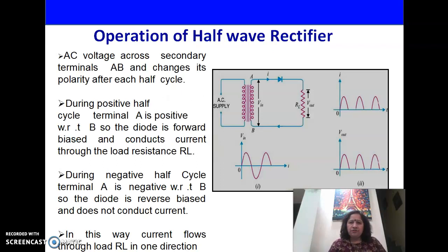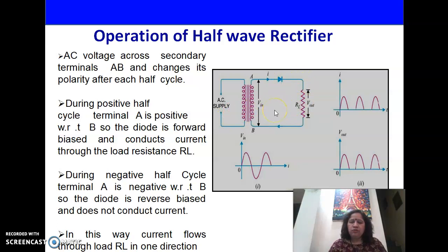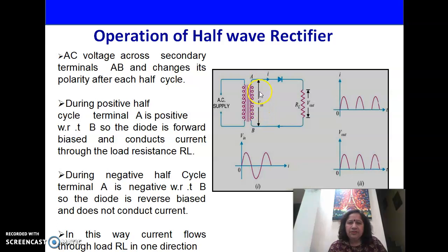To understand the operation of a half-wave rectifier, first we should understand its construction. This is the circuit diagram of a half-wave rectifier. It consists of a transformer, a diode, and a load resistance RL. The AC supply, which is to be converted from AC to DC, is applied across the primary of the transformer. The AC voltage then appears across the secondary of the transformer at terminals A and B.